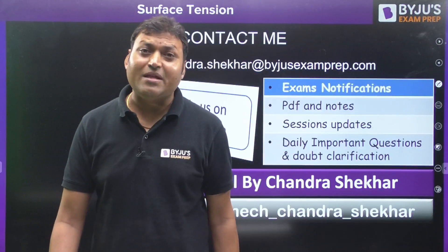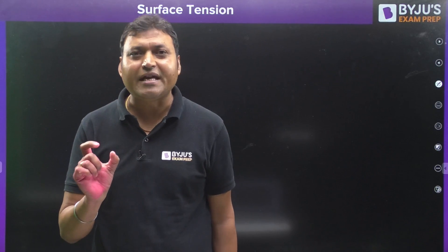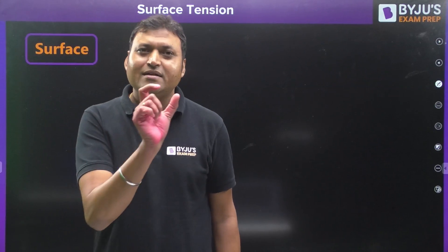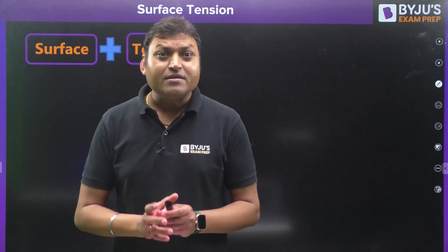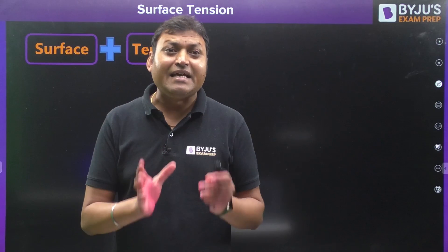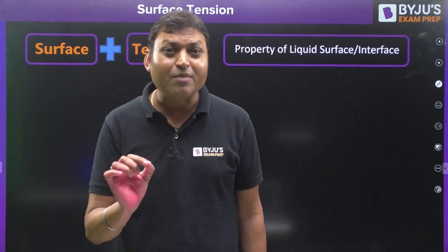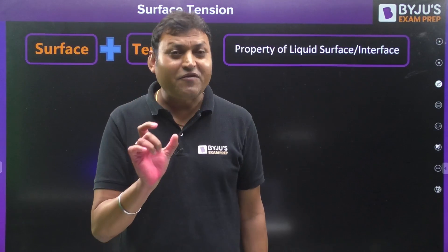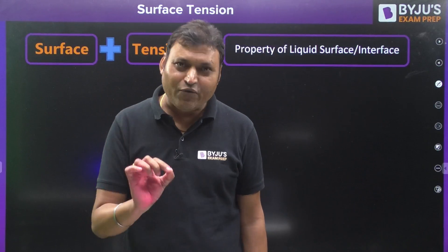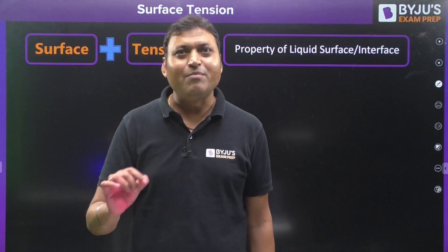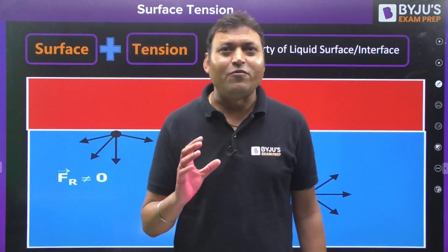So let us start from the beginning. The word 'surface tension' is made up of two words: surface plus tension. It means the liquid surface is in tension. Surface tension is a property shared by two fluids — one of the fluids is a liquid, and the other can be a liquid or a gas.